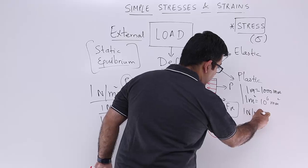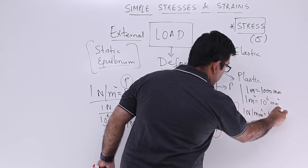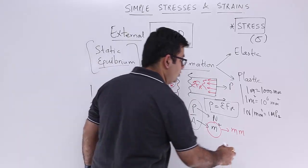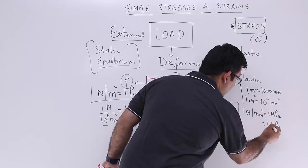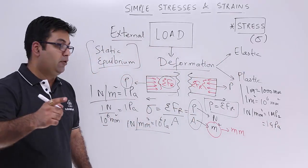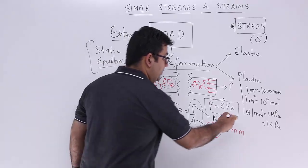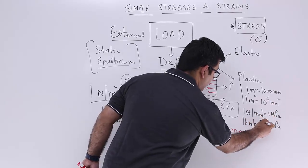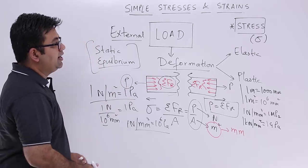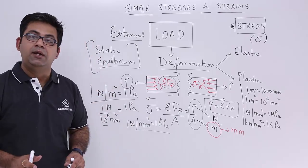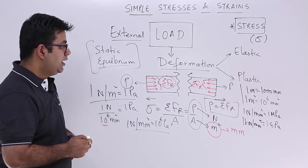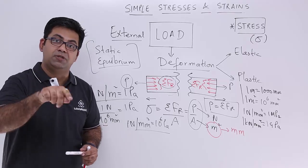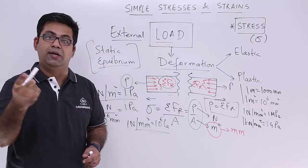So 1 N/mm² equals 1 MPa. If you go into gigapascal: one giga equals 10³ mega, so 1 GPa equals 1 kilo-newton per mm² of stress. This is how you understand, define, and mathematically denote the quantity of stress. In the next video, we will talk about the kinds of stresses corresponding to the kinds of loads.